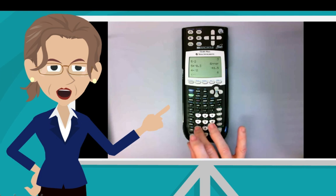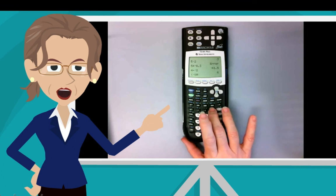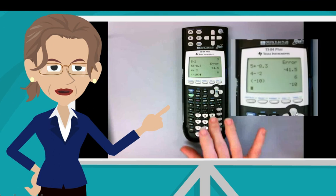And for 10, enter 1, 0. Now close your parentheses with close paren above the 9. If you press Enter, you'll hear minus 10. Minus 10.